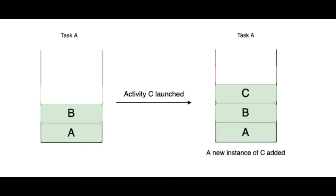The third launch mode is Single Task. In this launch mode, a new task is always generated and a new instance is added to the task as the root. If the activity already exists in another task, no new instance is created and the Android system transmits the intent information via the onNewIntent function. At any one time, there will be just one instance of the activity.